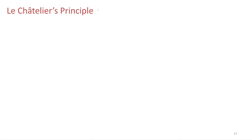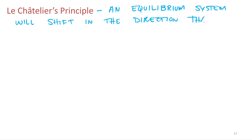So Le Châtelier's Principle talks about how a system will respond to disturbances. Basically, Le Châtelier's Principle states that an equilibrium system will shift in the direction that minimizes any disturbance to that equilibrium system.